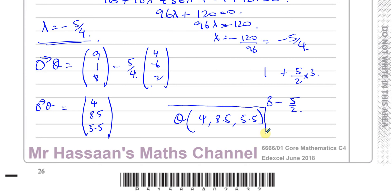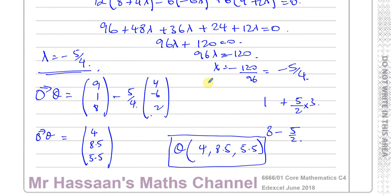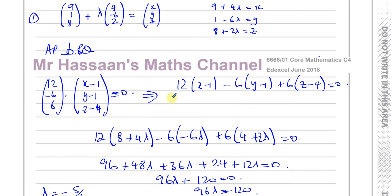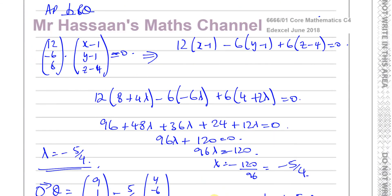And there we have the coordinates of the point Q, and the answer to this question. I'll put a link to the other parts of this question (parts A to D), and also links to other questions from the Edexcel June 2018 C4 paper, topics on vectors, and somewhere to subscribe to the channel. Thank you for watching, and I'll see you soon.